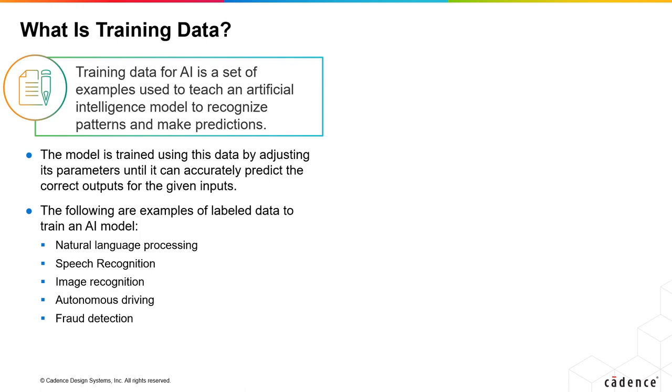Training data is a set of examples to teach an AI model to recognize models and make predictions. The model uses the data by adjusting parameters until it accurately predicts the correct outputs for the provided inputs.